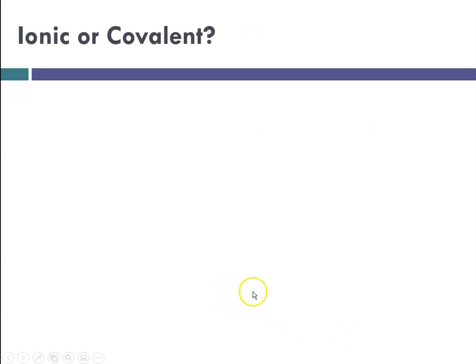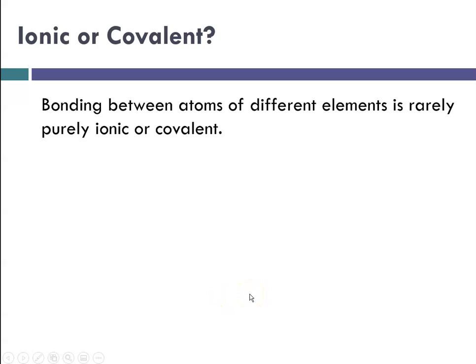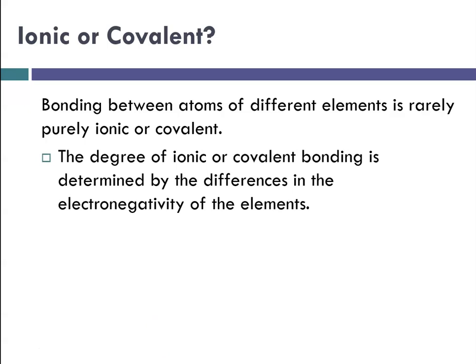What decides whether bonding is ionic or covalent? Bonding between atoms of different elements is rarely purely one or the other. The degree of ionic or covalent character is determined by the electronegativity differences of the elements. Recall from the chapter on periodic law, there is a scale for electronegativity — the Pauling scale — ranging from 0 to 4.0, with fluorine having the highest electronegativity of any element.